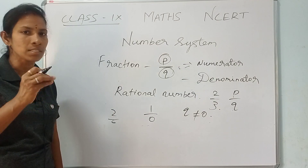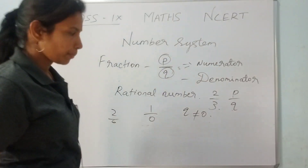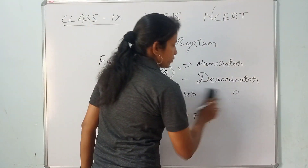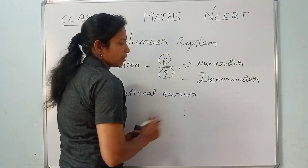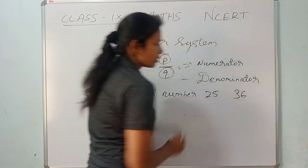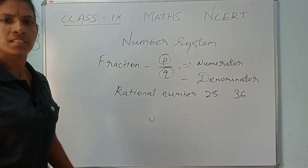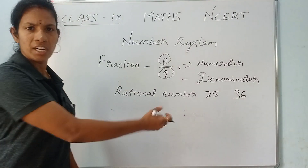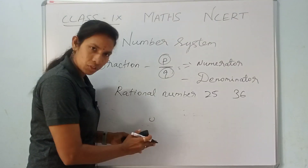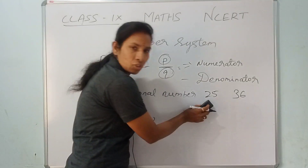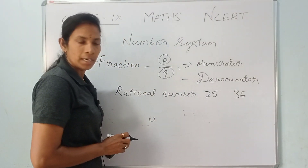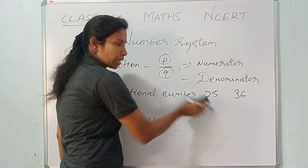The denominator Q must not be 0. For example, consider the number 25. Since 25 is not equal to 0, we can write it as a fraction. So 25 is a rational number. It is also a natural number and a whole number.